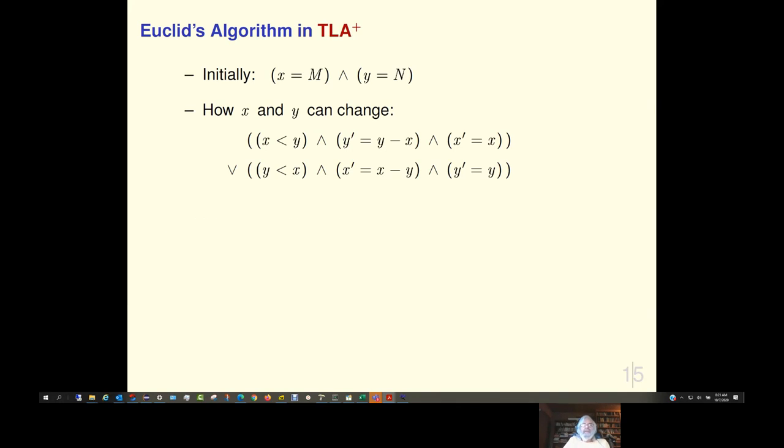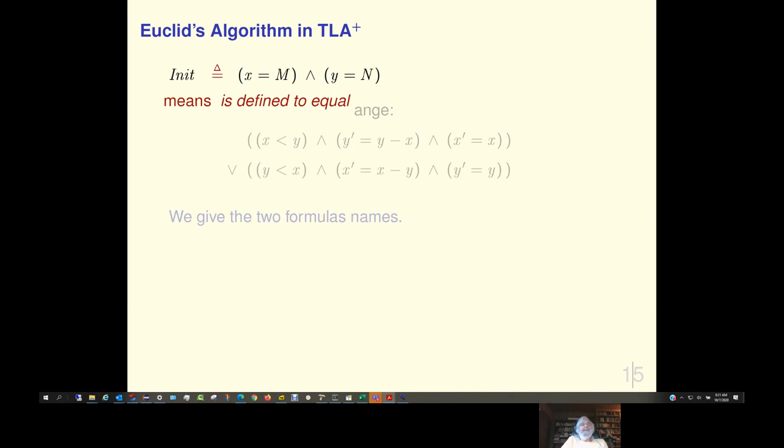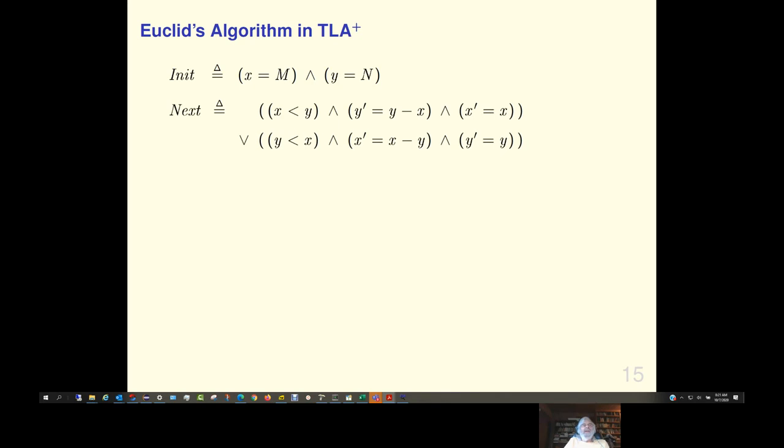Okay, let me write it in TLA+. What we do in TLA+, is we just give those two formulas names. And the initial part is typically usually called init. So, I write this init. And this funny equal delta symbol just means is defined to equal. So, we say init is defined to equal this formula x equals m and y equals n. And the how x and y can change formula is usually called next. So, this is Euclid's algorithm in TLA+. That's actually the pretty printed version. This is what it looks like. This is what you actually type in ASCII. Looks very much the same. And, you know, once you get used to it, most people, most programmers don't like looking at the pretty printed one. They just look at the ASCII part. So, that's it.